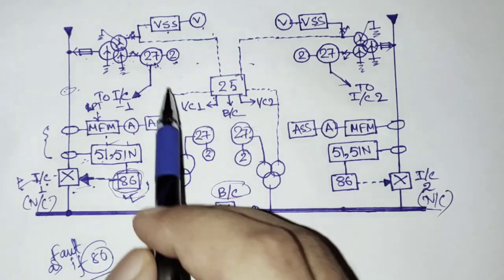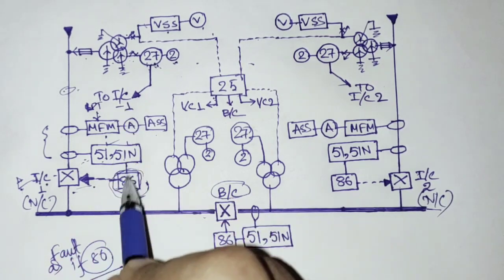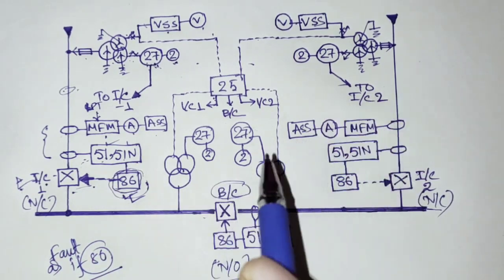So it will allow the bus coupler to close. But if you connect this 27 with 86 then the system will understand that there is a fault and the bus coupler will not close.